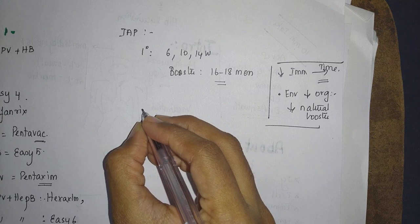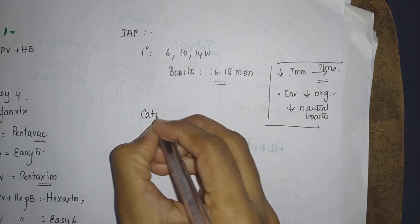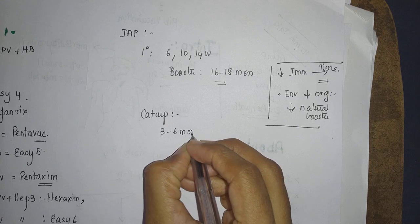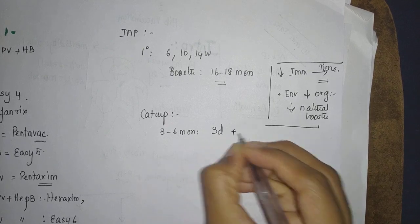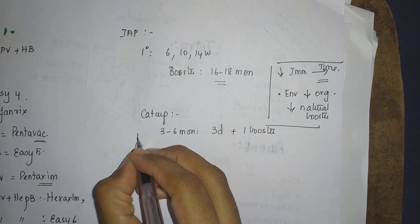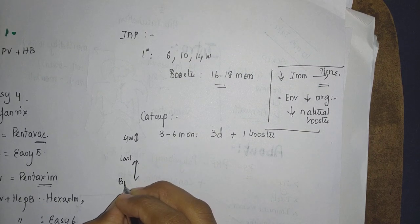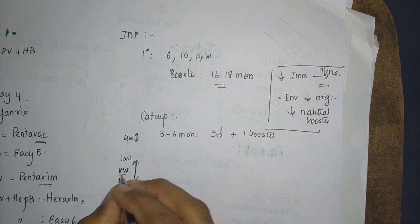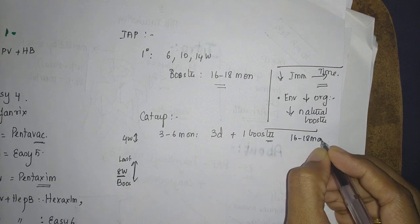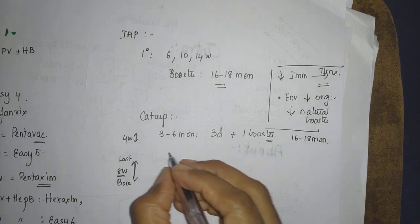If vaccination has been deferred or not given, do a catch up vaccination. Catch up if the child is starting between 3 to 6 months: give 3 dose plus 1 booster. Timing between 2 vaccinations should be 4 weeks. And the last vaccine and the booster should be 8 weeks minimum. So preferably keep the booster at 16 to 18 months so you will still end up having at least 2 months gap between the last and the booster vaccine.